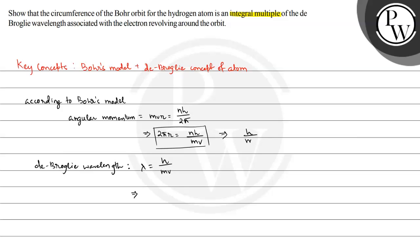So h by mv equals 2πr divided by n. We can put this value here. Lambda is equal to 2πr divided by n. So 2πr is equal to n lambda. So 2πr is the circumference of an orbit and lambda is the de Broglie wavelength.